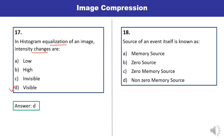Question 18: Source of an event itself is known as — memory source, zero source, zero memory source, or non-zero memory source? Source of an event is known as zero memory source. C is the correct answer.